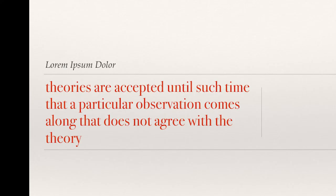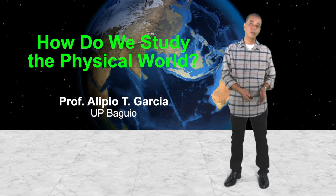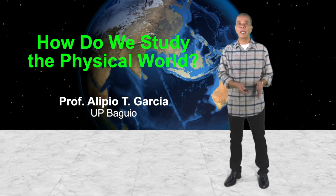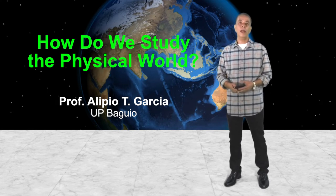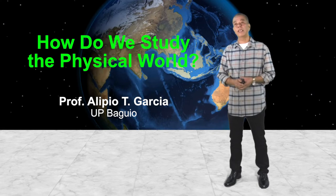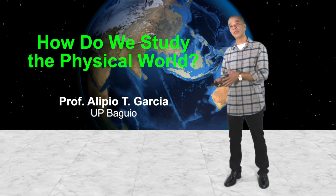We therefore say that theories are accepted until such time that a particular observation comes along that does not agree with the theory, and it is time to look for a better theory. It does not necessarily mean that the theory is wrong. If you compare Newtonian mechanics with Einstein's relativity theory — actually, Einstein did not disprove Newtonian mechanics. What the relativity theory did to mechanics is that it just relegated it to a limited applicability.